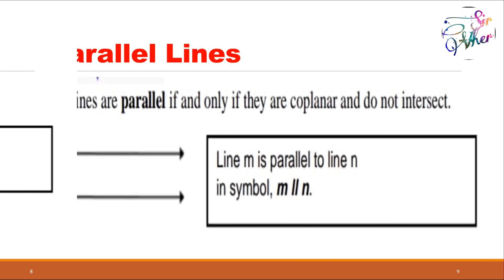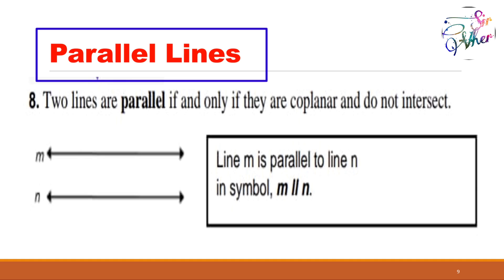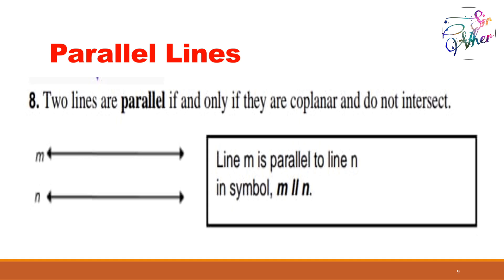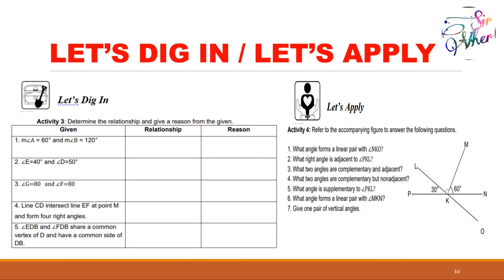We also have parallel lines. Two lines are parallel if and only if they are coplanar and do not intersect — these two lines will never meet. In the figure, line M and line N: line M is parallel to line N because if you extend them in both directions, they will never meet. Therefore, these two lines are parallel.